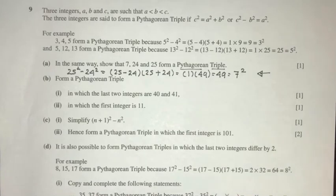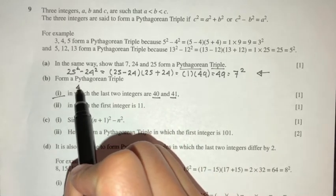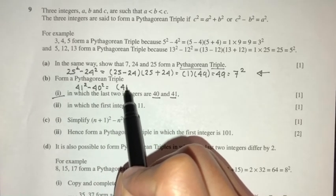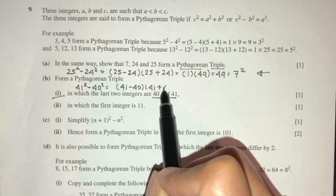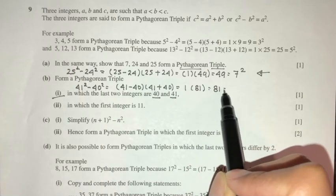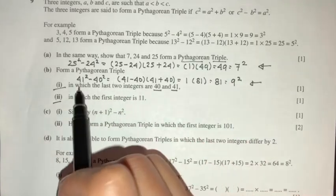For part B, form a Pythagorean triple in which the last two integers are 40 and 41. We do the reverse: 41 squared minus 40 squared equals 41 minus 40, times 41 plus 40, equals 1 times 81. And 81 is 9 squared. So your answer — the Pythagorean triple — is 9, 40, 41.